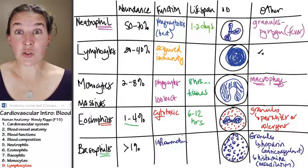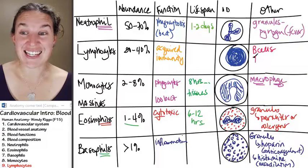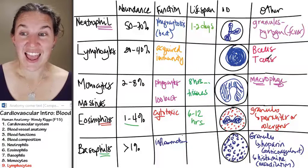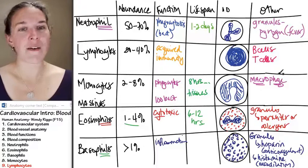Lymphocytes come in two flavors. We have B-cells, does this sound familiar, and T-cells? And we'll talk about them and their specific jobs very specifically in O-physio.